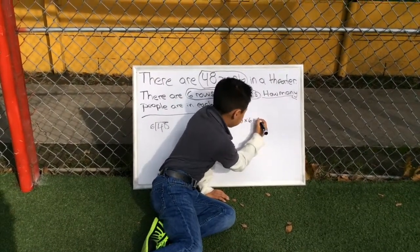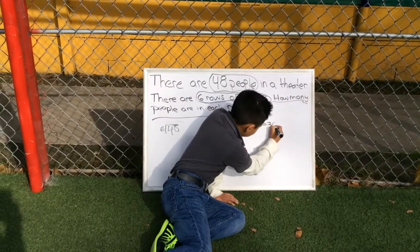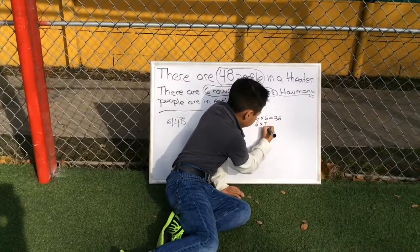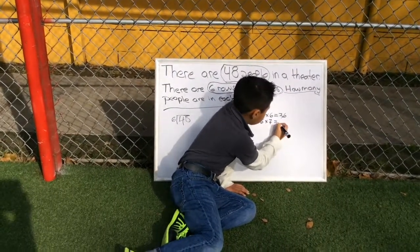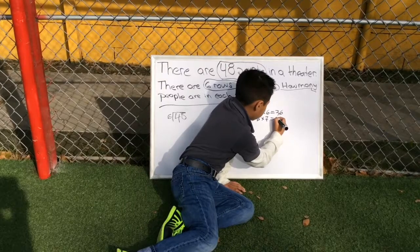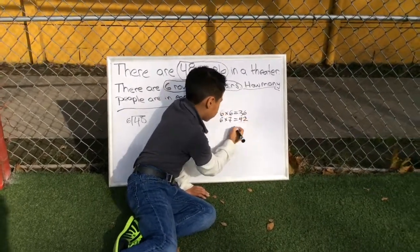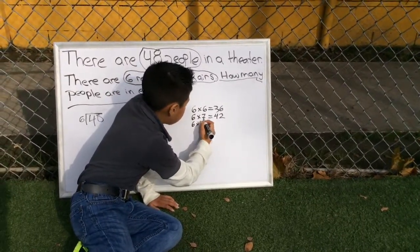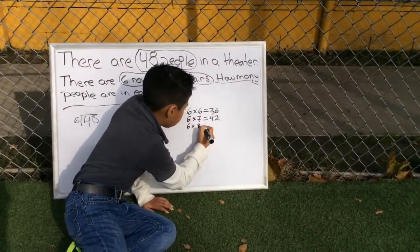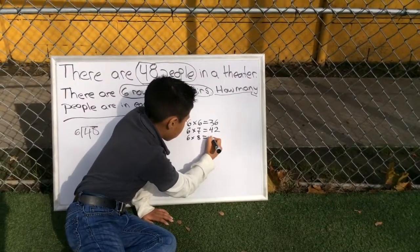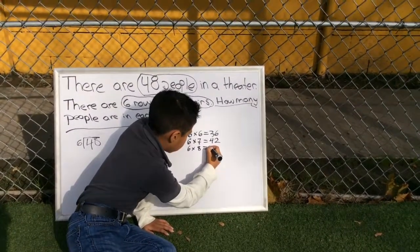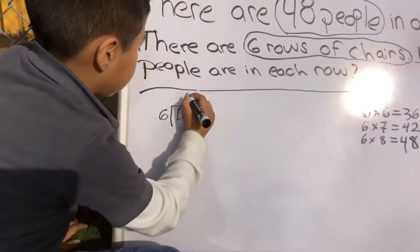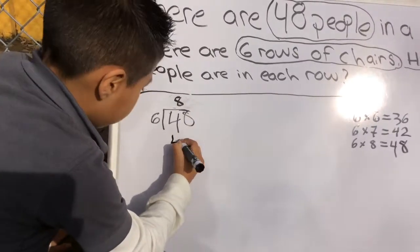6 times 6 equals 36. 6 times 7 equals 42. 6 times 8 equals 48. We now know 6 times 8 gives us 48.